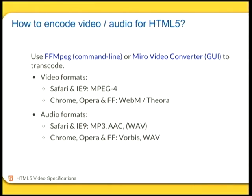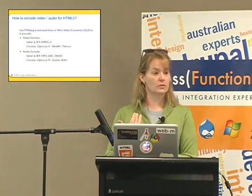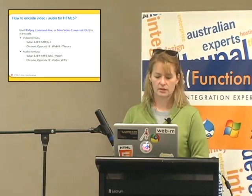How do we encode video and audio for HTML5? Obviously we need multiple formats. What I like to use is FFmpeg — I'm a command line person, so I just run FFmpeg with -i for input file. If I've got an MPEG4 file from my camera, I do: ffmpeg -i inputfile.mpeg4 outputfile.webm, and it'll just transcode it to WebM. Simple as that. Same for Ogg video. It also does audio. FFmpeg is really nice that way.